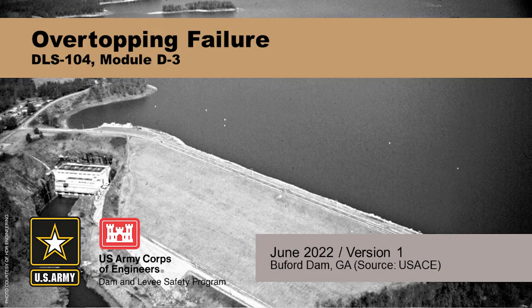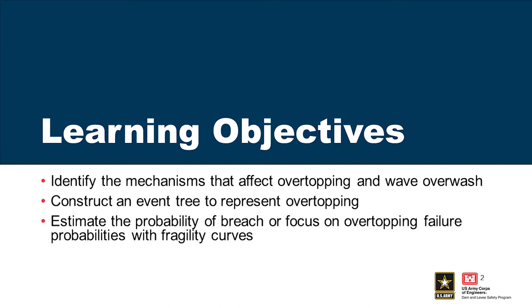We're about to talk about one of my personal favorite failure modes. For this presentation, there are a few learning objectives. We're going to talk about the mechanisms that affect overtopping and wave overwash, how to construct an event tree that represents overtopping, and the probability of breach and the probabilities that have to do with fragility curves — or what we'd now call system response probability, SRP. If you see fragility curves on any of these slides, that's synonymous with SRP.